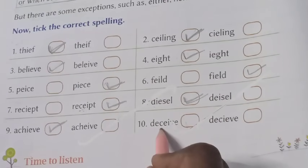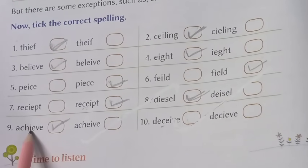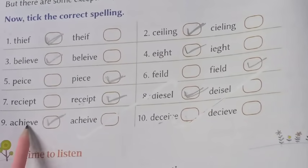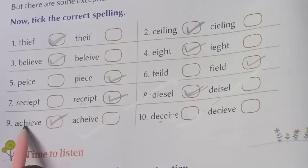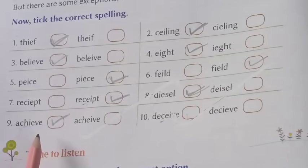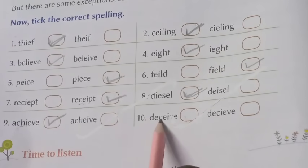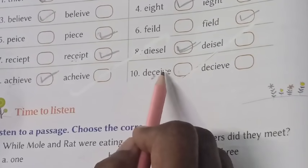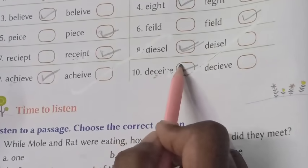In deceive we have C here, so E comes first — D-E-C-E-I-V-E. But in achieve, see here: there is C in the word, but it is not immediately before the I-E or E-I — it has H in between. So that rule does not apply here, and it will be I-E. Here in deceive we have to follow the rule: D-E-C, so E will come first, not I, immediately after C. So D-E-C-E-I-V-E is the correct spelling.